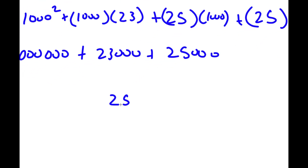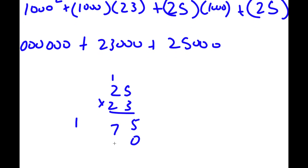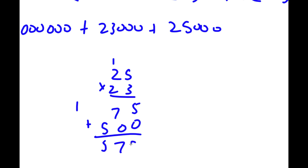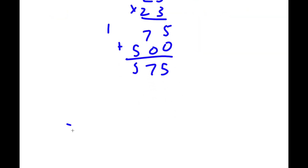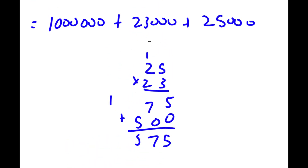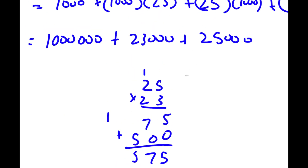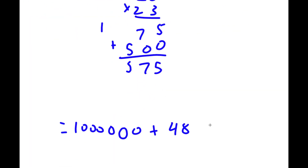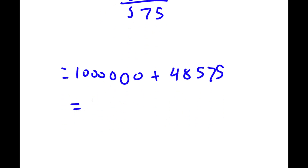Let's simplify. 1,000 squared is 1,000,000. Plus 1,000 times 23 is 23,000. Plus 1,000 times 25 is 25,000. Plus 25 times 23: 5 times 3 is 15, carry 1; 3 times 2 is 6, plus 1 is 7; 2 times 5 is 10, carry 1; 2 times 2 is 4, plus 1 is 5. So 25 times 23 is 575. So I have 1,000,000, plus 23,000 plus 25,000 which is 48,000, plus 575, giving 48,575. Adding these gives 1,048,575. So this is my answer.